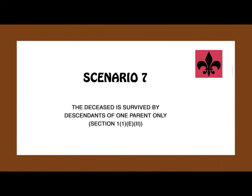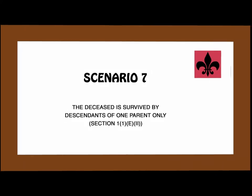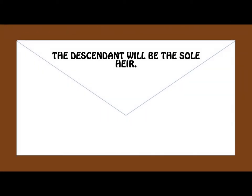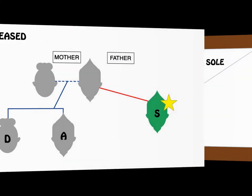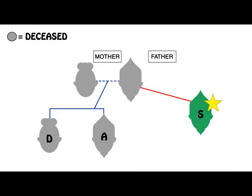In scenario 7, the deceased is survived by descendants of one parent only. Where the deceased is only survived by the descendant of one parent, then that descendant will be his sole heir. For example, D dies intestate. D's brother, mother and father have predeceased her. She is survived by her half-brother S from her father's side. S will therefore inherit the entire estate.